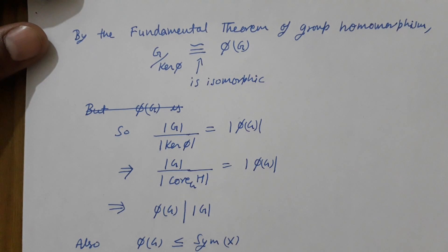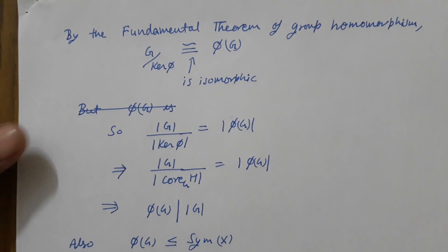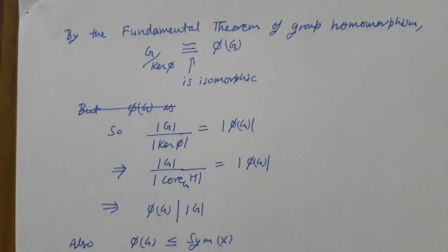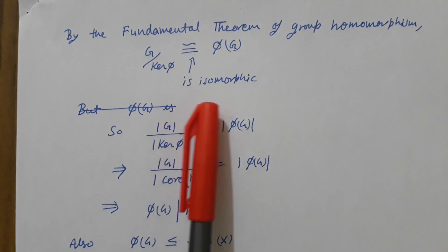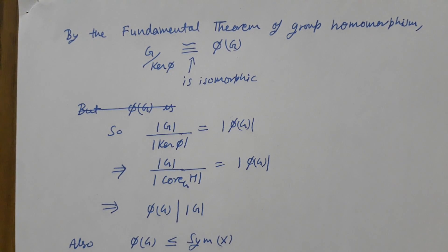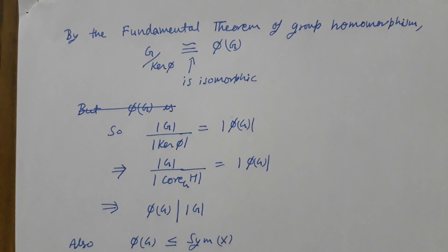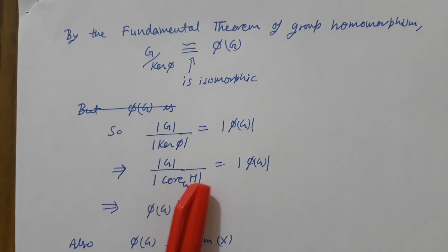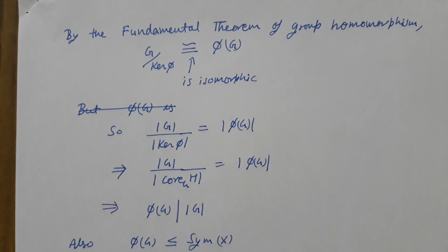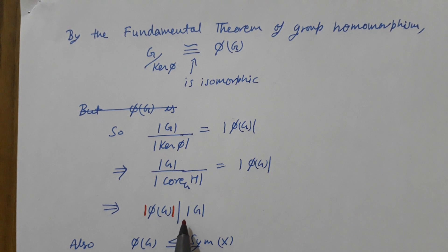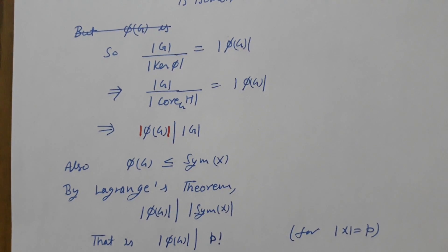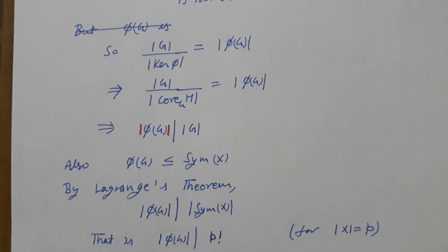By the fundamental theorem of group homomorphisms, G/ker(φ) is isomorphic to φ(G). Therefore |G|/|ker(φ)| = |φ(G)|. Since ker(φ) = core(H in G), we can write |G|/|core(H in G)| = |φ(G)|. This means |φ(G)| divides |G|. Now φ(G) is a subgroup of Sym(X).